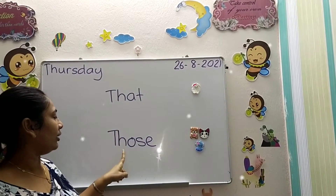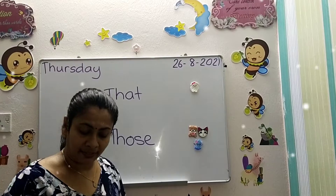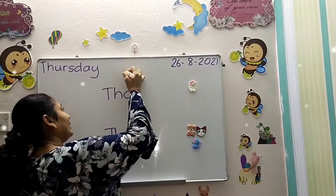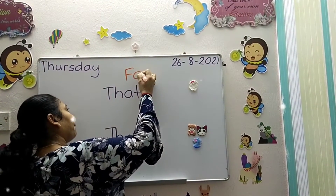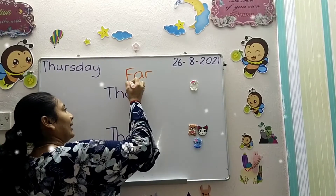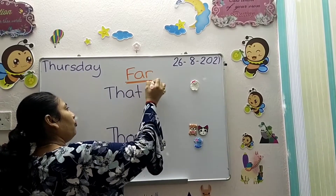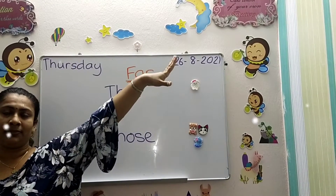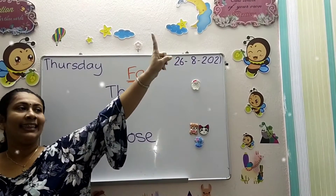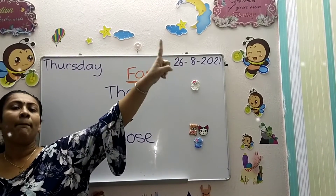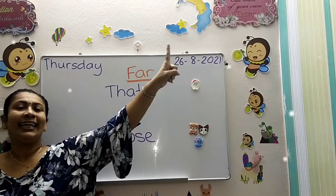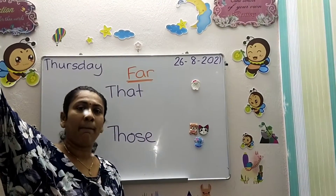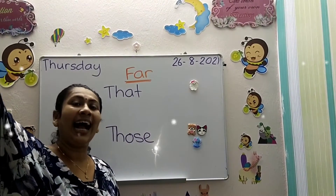So 'that' and 'those' are demonstrative nouns for objects that are far. When I say 'that is my car' or 'that is my house,' my hand and finger will point further away. And if I'm going to use 'this' and 'these,' I'm going to point at items near to me.